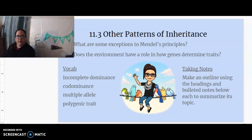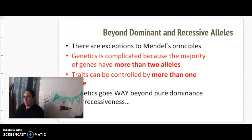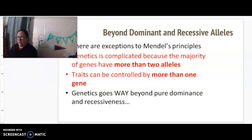Let's go beyond dominant and recessive alleles. There are exceptions to Mendel's principles. Genetics is complicated because the majority of genes have more than two alleles. We've looked at Punnett squares using two alleles, but in real life there are more. Traits can also be controlled by more than one gene — multiple alleles, multiple genes — so it goes way beyond pure dominance and recessiveness.